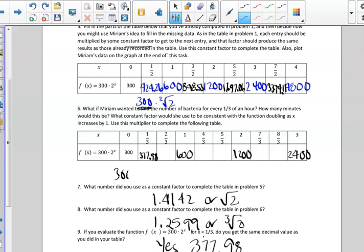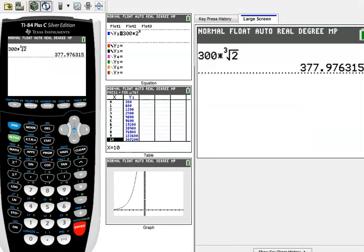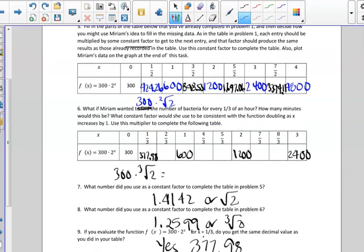we're starting with 300, and we need to find that constant multiplier. So of course, we can use the calculator. Some students did guess and check, but this value would be times the cube root of two. So if I come to my calculator,